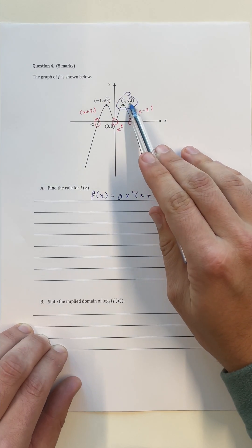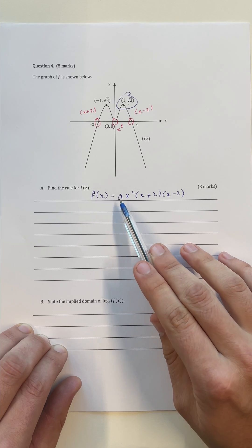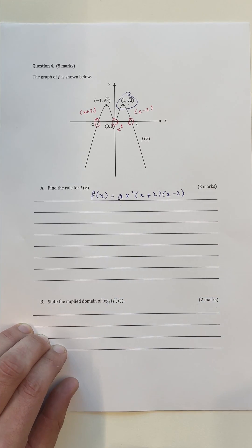What we need to do is just substitute in this point, and then our only unknown is going to be our dilation factor, and then we can solve for our dilation factor.